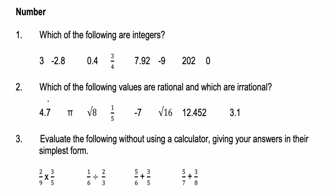This is the Numbers section, question number one: which of the following are integers? Integers in maths just means whole numbers. So three is a whole number; minus 2.8 is a decimal so it's not an integer; 0.4 is a decimal so not an integer; three quarters ends up being 0.75 so that's not an integer. Negative whole numbers are still integers. 202 is an integer, and zero we class as a whole number.